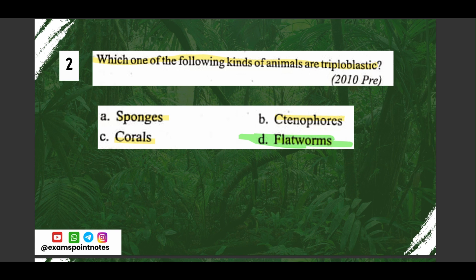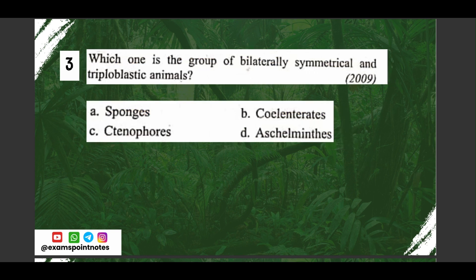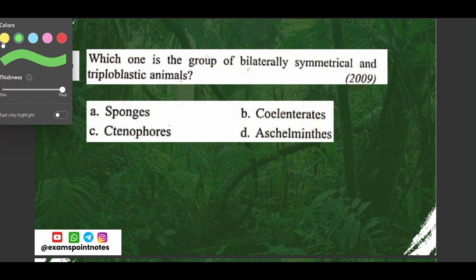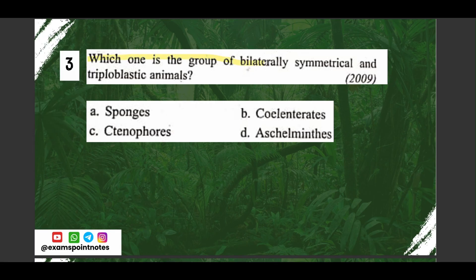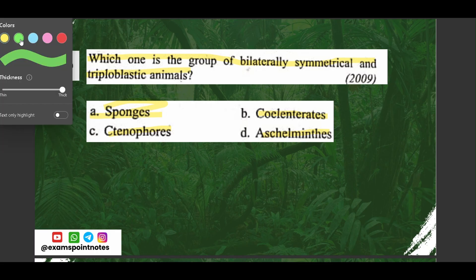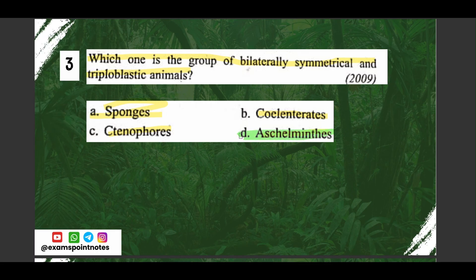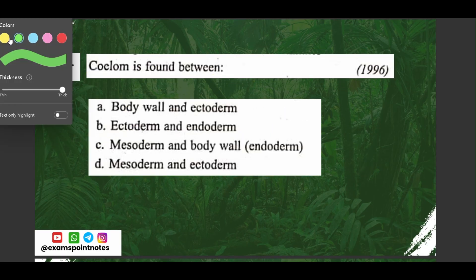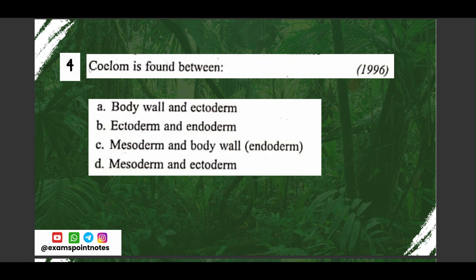Question number three: which one is the group of bilaterally symmetrical and triploblastic animals? The correct option is option D, Aschelminthes.